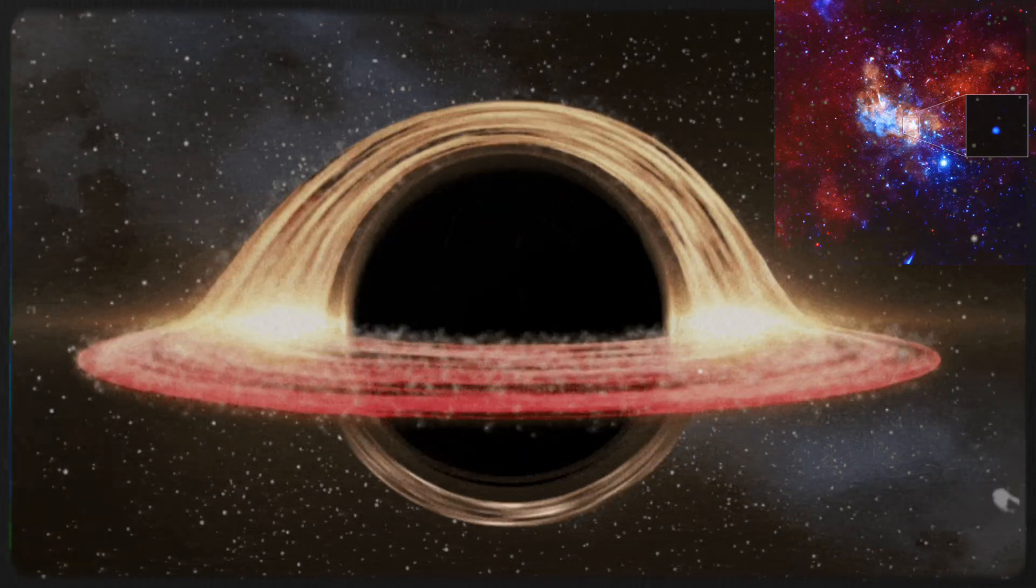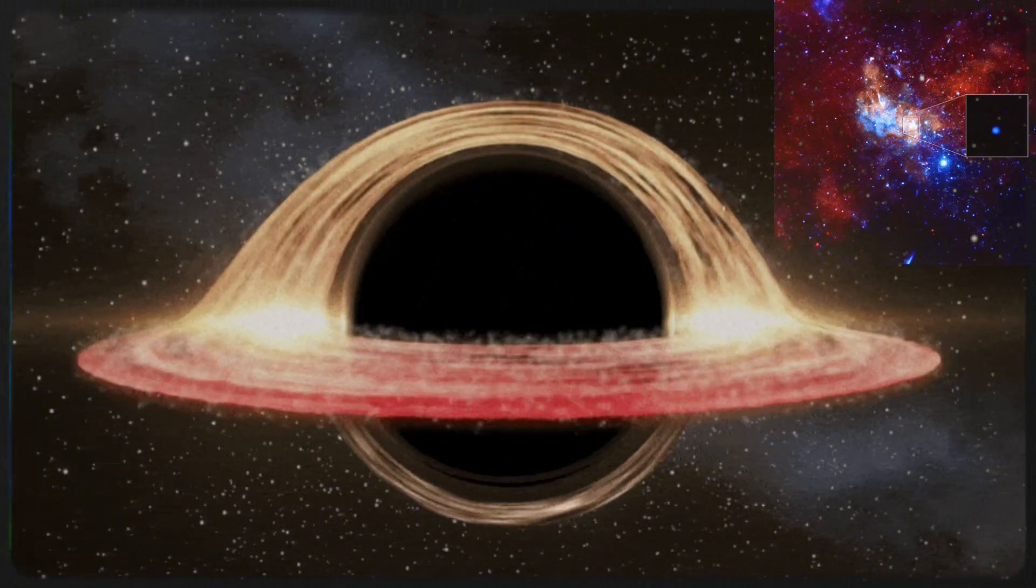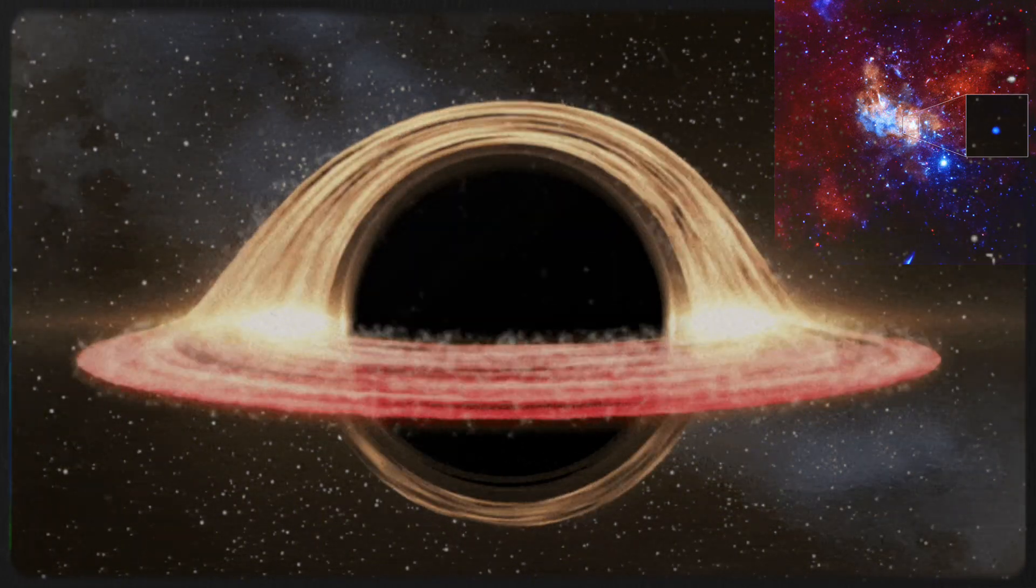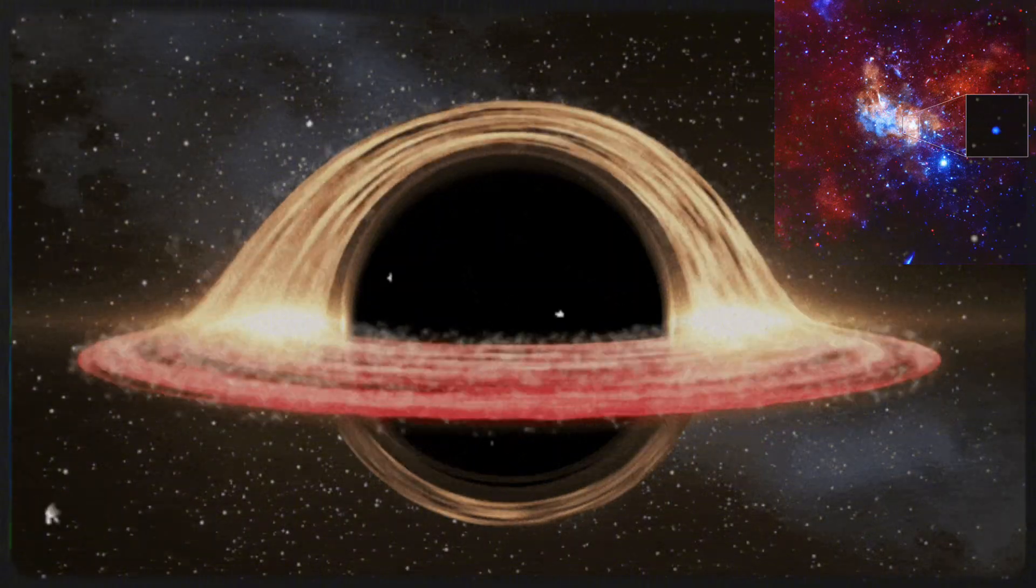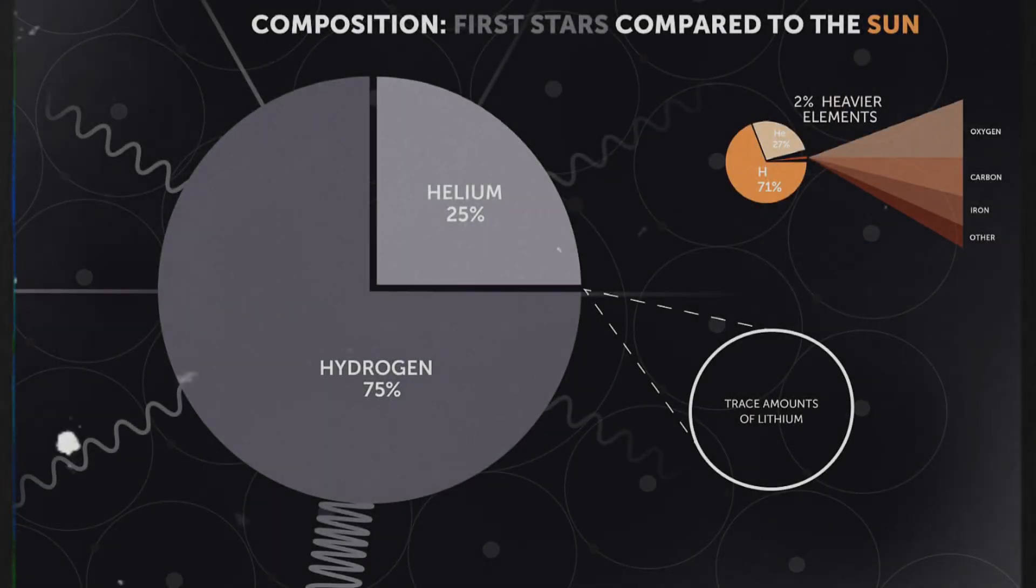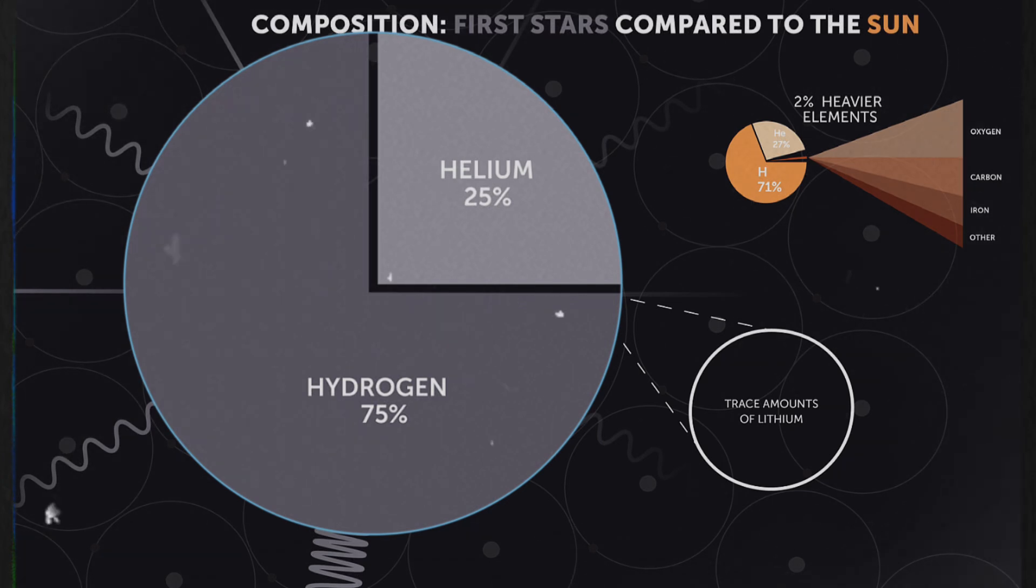The search continues for even younger primordial black holes from just after the Big Bang. The abundance of black holes might be due to either remnants of rapidly formed massive stars or dense gas clouds collapsing into black holes. Scientists speculate that the first population three stars, composed mainly of hydrogen and helium, exploded and formed black holes, which then grew rapidly.